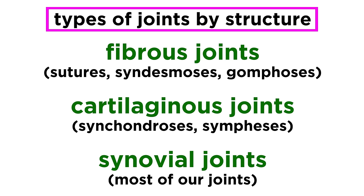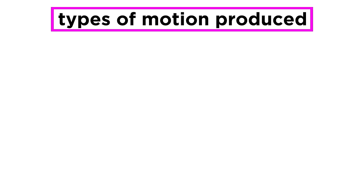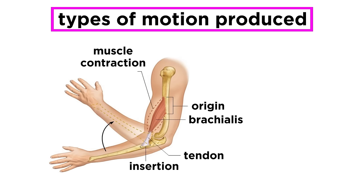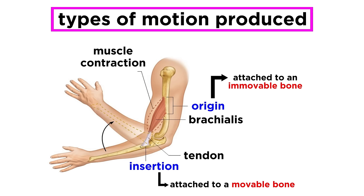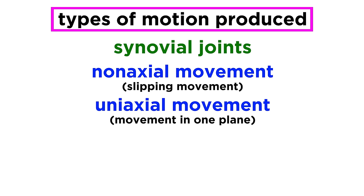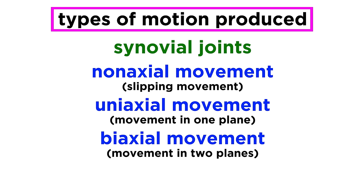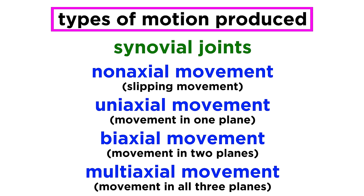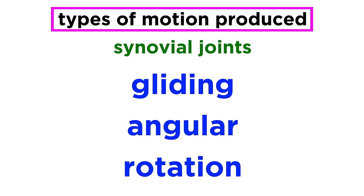Now let's learn about the terminology that refers to the types of motion joints allow. Muscles have an origin attached to an immovable bone and an insertion attached to a movable bone. When muscles contract around joints, we get movement, which we can describe by referencing certain lines or axes and planes of space. For synovial joints, there can be non-axial movement (slipping movements), uniaxial movement (in one plane), biaxial movement (in two planes), and multiaxial movement (in all three planes). Beyond this, motion can be gliding, angular, or rotation.